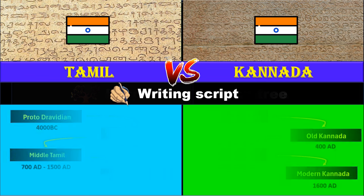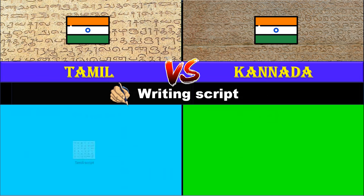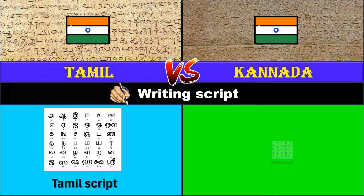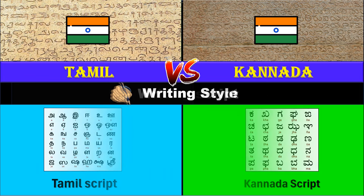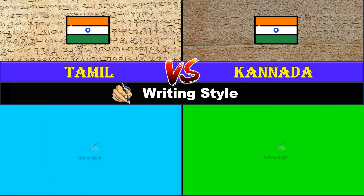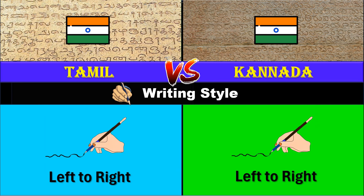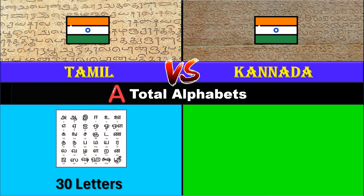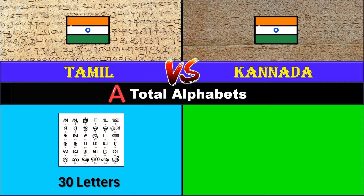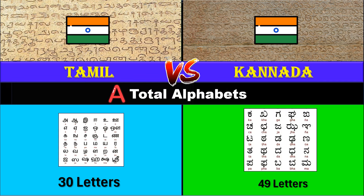Writing script: Tamil uses the Tamil script, Kannada uses the Kannada script. Writing style: both languages are written from left to right. Total alphabets: Tamil has 30 letters, Kannada has 49 letters.